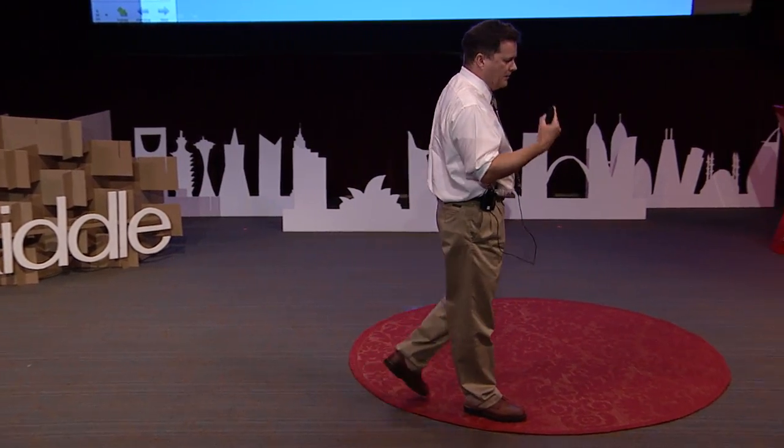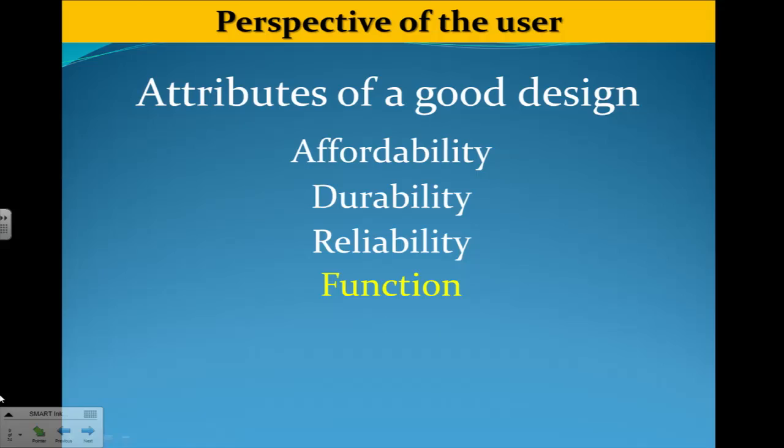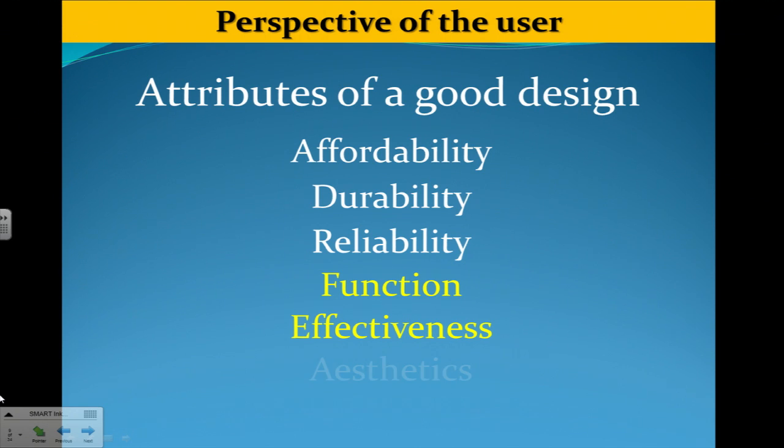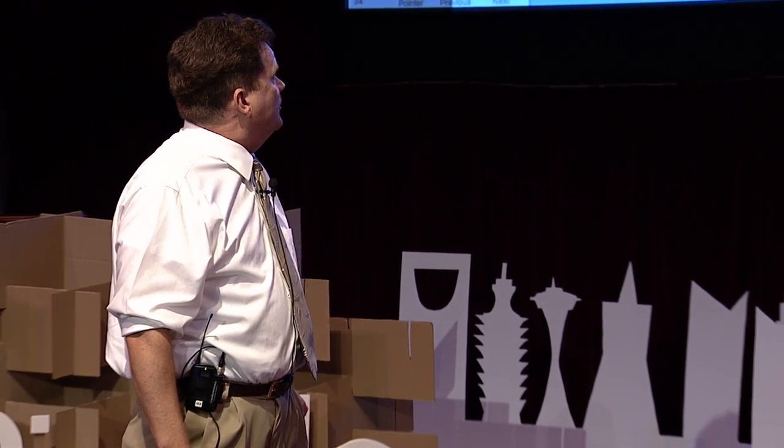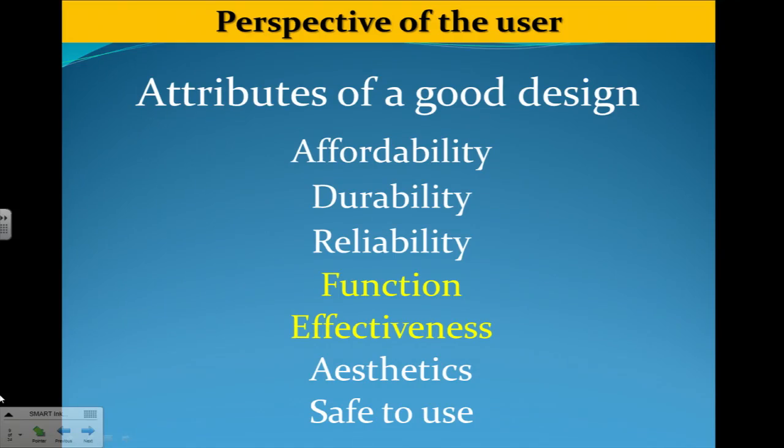Reliability — I want my fridge, my two-year-old fridge by the way, every time I open the door, I want a cold beverage in there, and it has been so far. Then we have function and effectiveness, which actually match those of the designer, and aesthetics. If you're paying a lot of money for a product, you want to show it off. If you buy an airplane, you want it to look like the million dollars you just paid. And finally, is it safe to use? When we get engrossed in our designs, we sometimes forget to think about whether this is actually going to be safe for people — is it going to kill somebody?